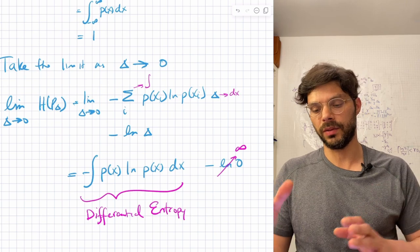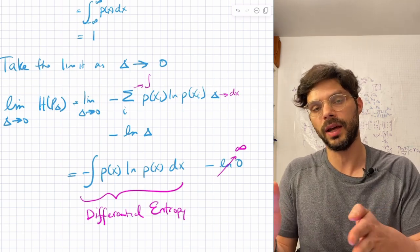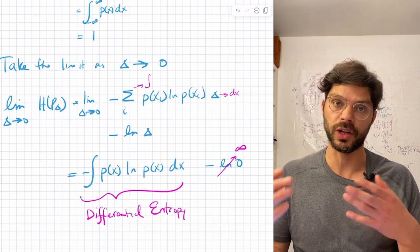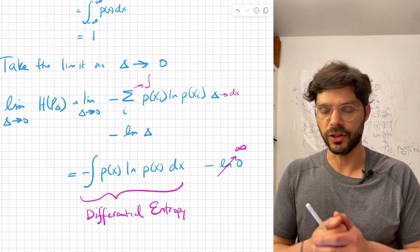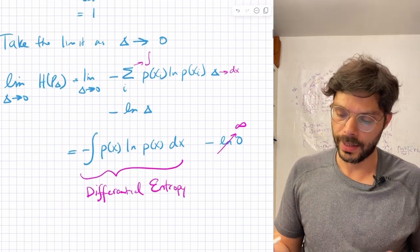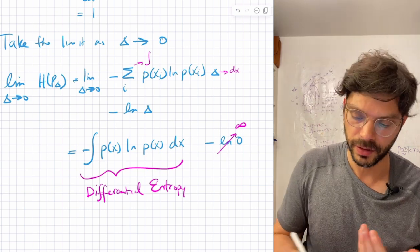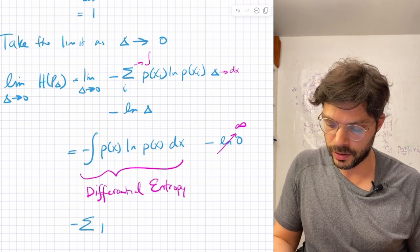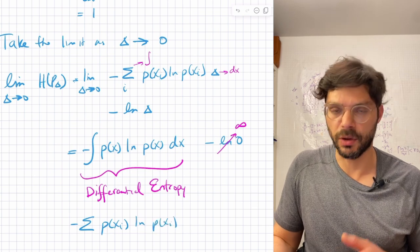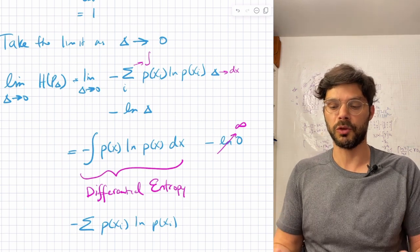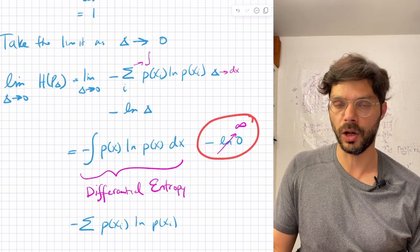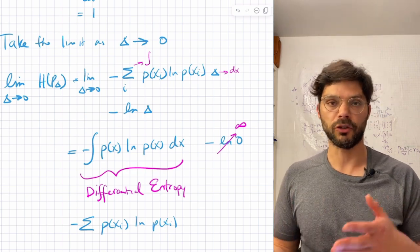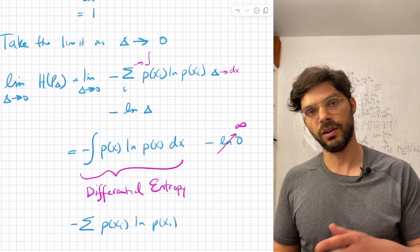That's all there is to it — a nice use of the mean value theorem to quantize a continuous distribution, take the limit, and drop the diverging term, which reflects the fact that specifying a continuous distribution infinitely precisely requires an infinite amount of information. Comparing to our discrete entropy formula, the differential entropy looks very much like it. The discrete version is a sum, while the continuous version is the corresponding integral — pretty much what you'd expect, with this small but important difference.